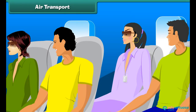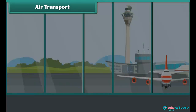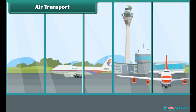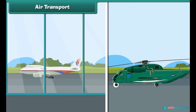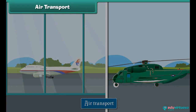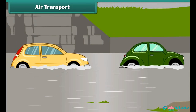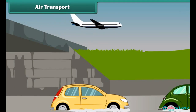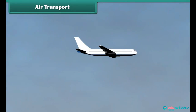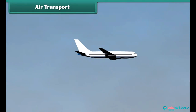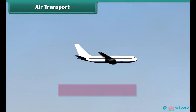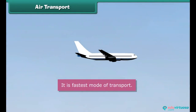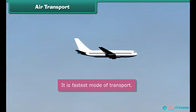The movement of goods and passengers from one place to another by means of aeroplanes and helicopters is called air transport. Air transport is very useful in transporting goods and passengers during natural calamities like earthquakes and floods. It is the fastest mode of transport.